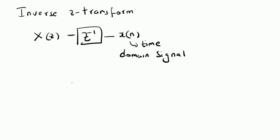In this video, we are going to derive the expression relating X of n to X of Z. Let us start with the definition of the Z-transform. X of Z is equal to, by definition, summation k is equal to minus infinity to plus infinity of X of k times z to the power minus k. That is the definition of the Z-transform.